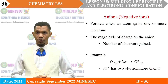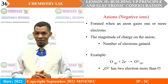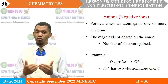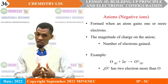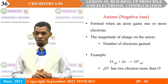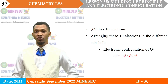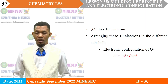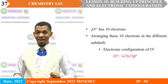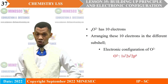Anions are formed when an atom gains one or more electrons, and the magnitude of the charge indicates the number of electrons gained. For example, for oxygen to form the oxide ion, the atom gains 2 electrons. So the oxide ion has 10 electrons while the oxygen atom has only 8 electrons. Arranging the 10 electrons in sub-shells gives the electronic configuration of the oxide ion as 1s², 2s², 2p⁶.